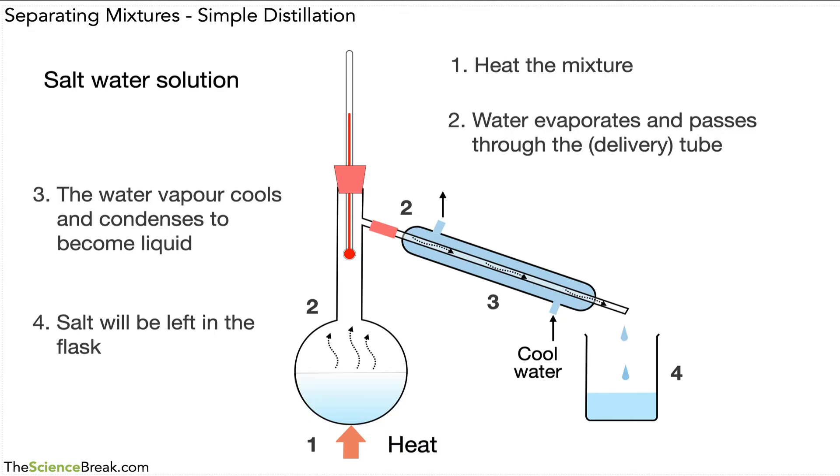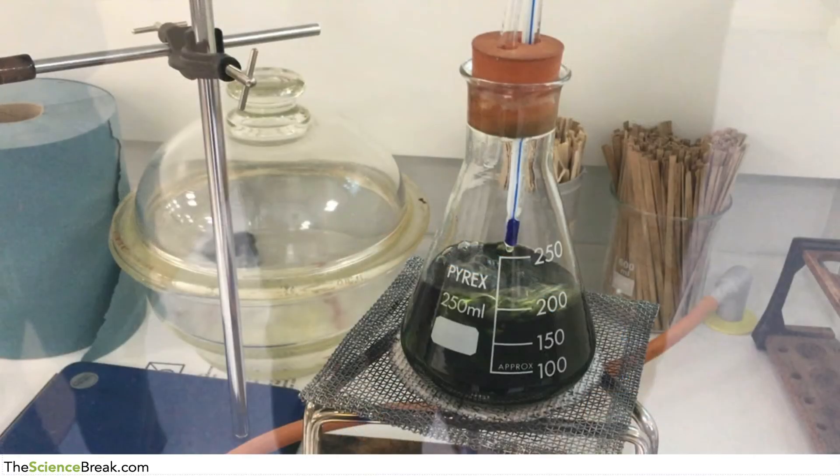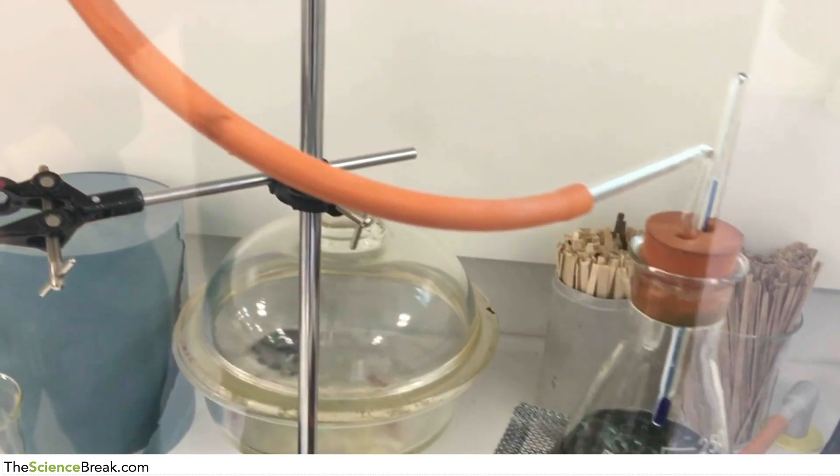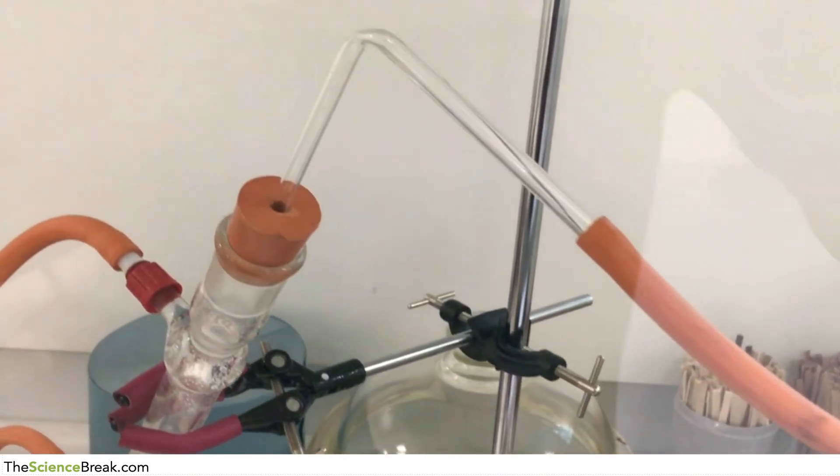You could also have different liquids of different boiling points and you would just adjust the method based on those boiling points. To finish off, I've got a short video of separating a mixture of some chlorophyll in a liquid called ethanol. There's our green chlorophyll in ethanol, heating to its boiling point.